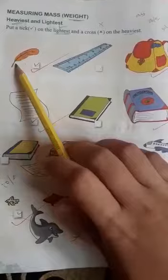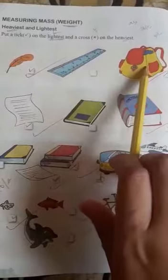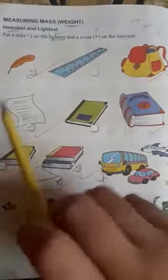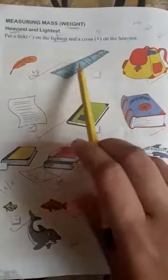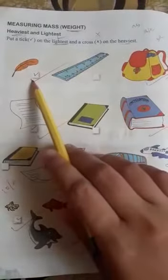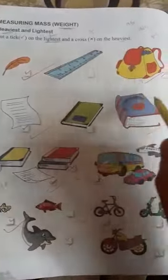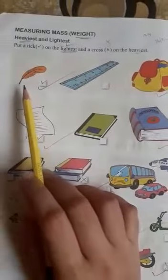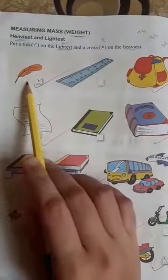See here this one: feather, ruler, and bag. Okay, out of these three you have to find the lightest one and the heaviest one. For the lightest picture, for the lightest thing, you have to put a tick mark. And the heaviest one you have to put a cross sign. So you know children, feather is the lightest one here.